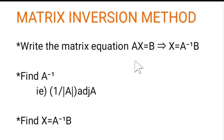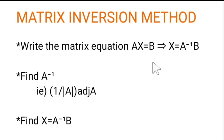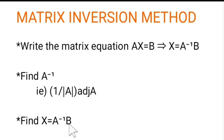The second step is to find A inverse, which is 1 by determinant of A into adjoint of A. Then the third step is to substitute the A inverse value, so x equals A inverse into b. Find the product of A inverse matrix and b matrix, then we get the values of the unknowns, that is the x matrix. Now let us see one example.